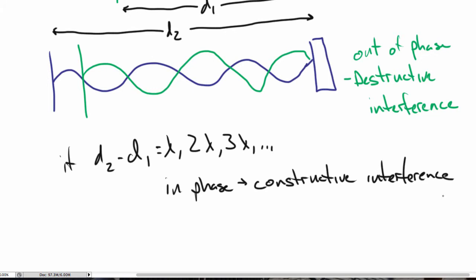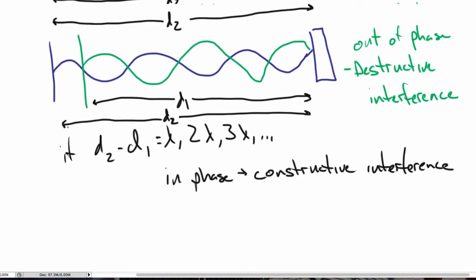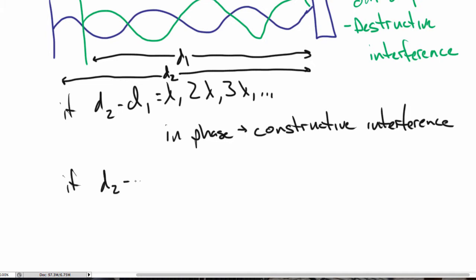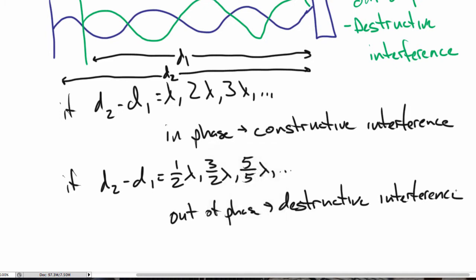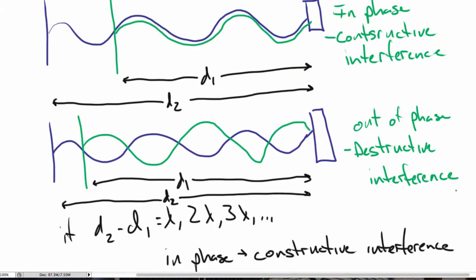In the other case, when I have a path difference equal to some half-integer multiple — so one-half lambda, three-halves lambda, five-halves lambda, and so on — now my two waves are going to be out of phase, and the result will be destructive interference. So this is how two or more sounds can interact to result in a sound that is louder than either individually, or even result in no sound at all.